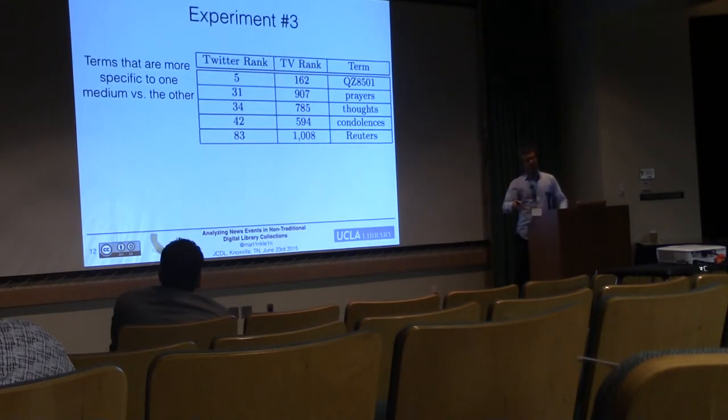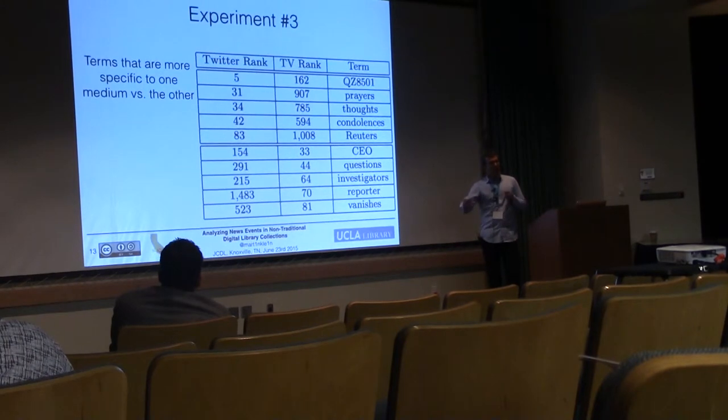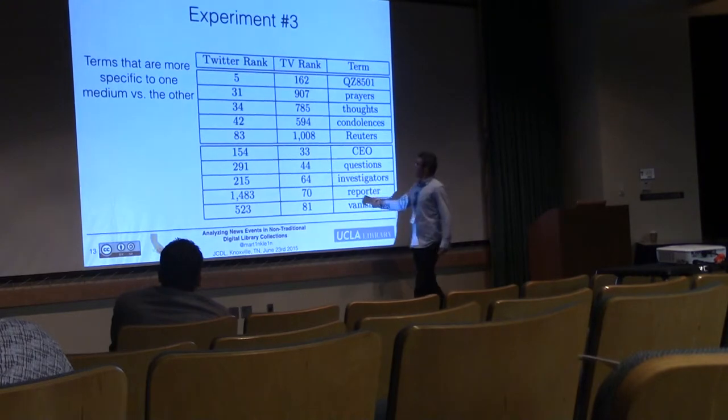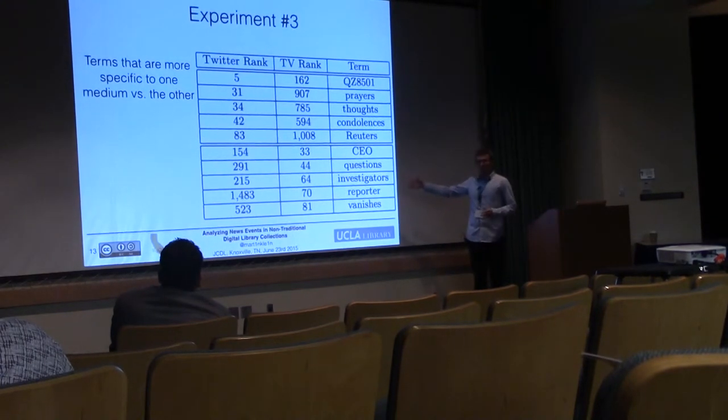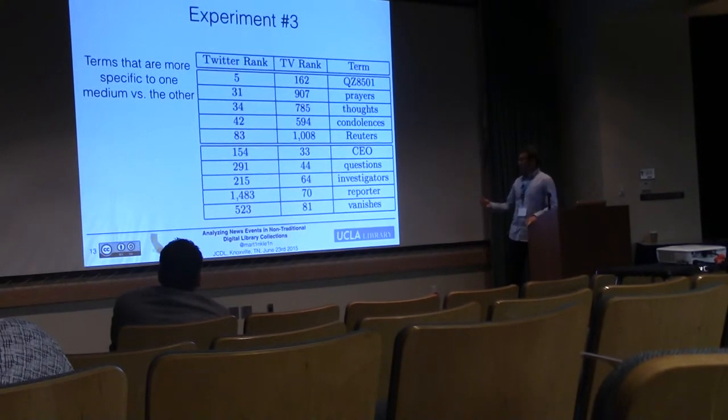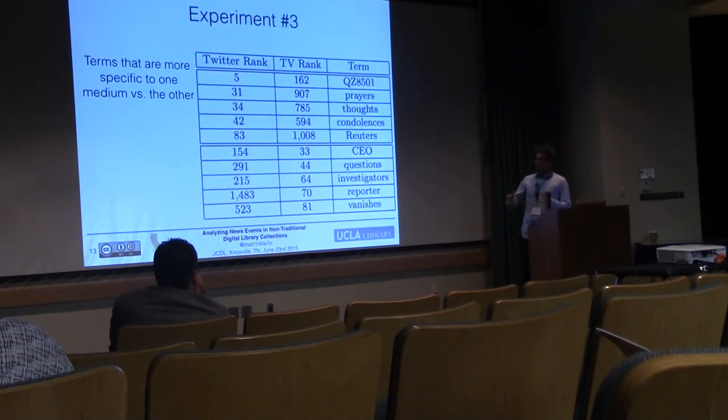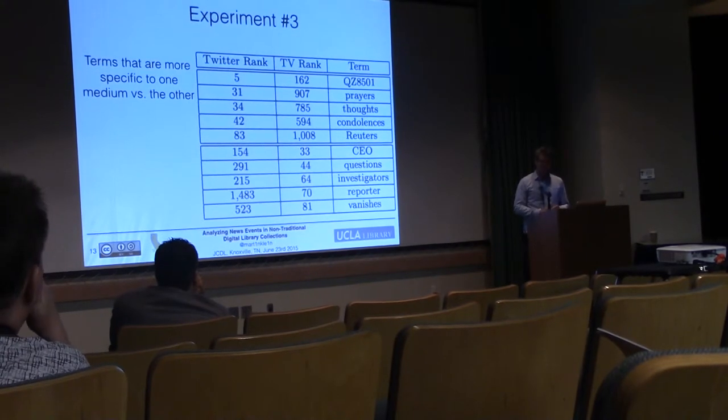If you turn this around and take terms that also occur in both collections but are much more frequent in TV news than Twitter, you see terms that indicate serious journalism—you talk about CEOs, reporters, investigators, questions being asked. More hard facts and terms that indicate investigative journalism, rather than the emotional aspect on high frequency for Twitter.